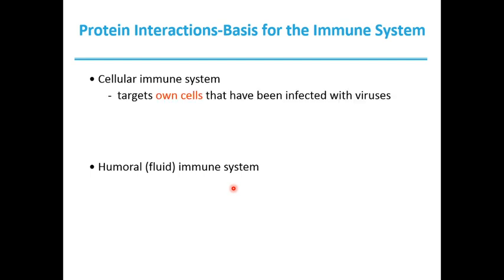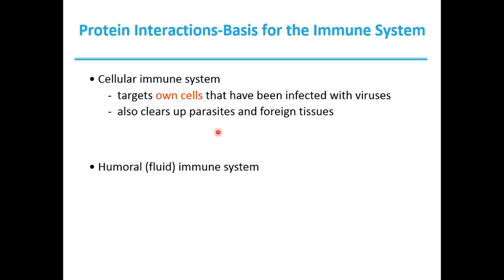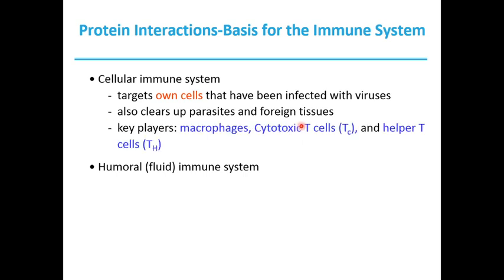The cellular immune system targets the body's own cells that have been infected with viruses, and also clears up parasites and foreign tissues. Key players in the cellular immune system include macrophages, cytotoxic T-cells, and helper T-cells.